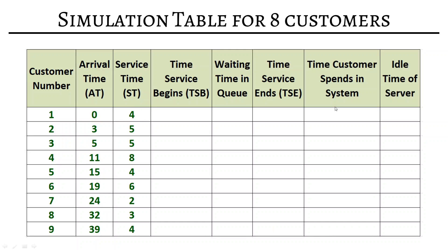We have nine customers. We have already calculated the arrival time and service time beforehand. Now we start the simulation procedure. At arrival time zero, we can immediately give service, so time service begins (TSB) is zero. The customer did not wait, so waiting time is zero. The service time is four minutes, so time service ends at four. The customer spent four minutes in the system, and the server was idle for zero minutes. For the second customer, arrival time is three but the system is busy until four, so service begins at four.